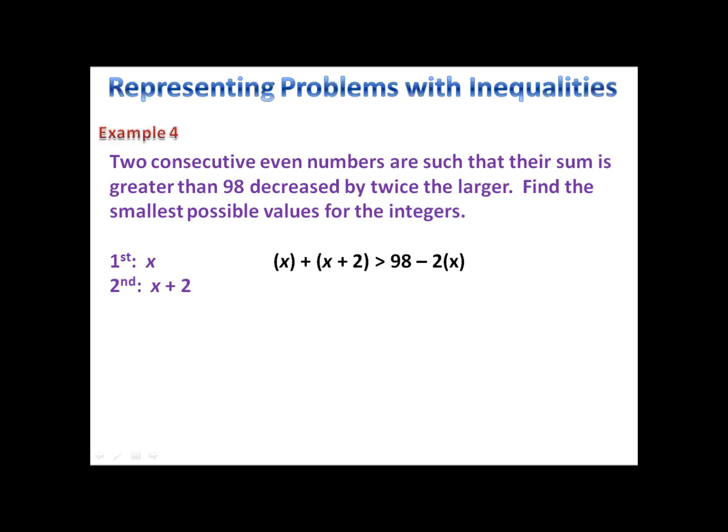I have two consecutive even numbers. Those numbers are x and x plus 2. It says the sum of those two numbers, x plus x plus 2, is greater than 98 decreased by twice the larger. I've written my inequality and now I can go through and solve. x is greater than 23. Now hold on a second. Here's our number line. We have an open circle at 23 and we're shading off to the right. We want two consecutive even numbers. Well, the first two consecutive even numbers are 24 and 26. So it looks like the smallest possible integers are 24 and 26.